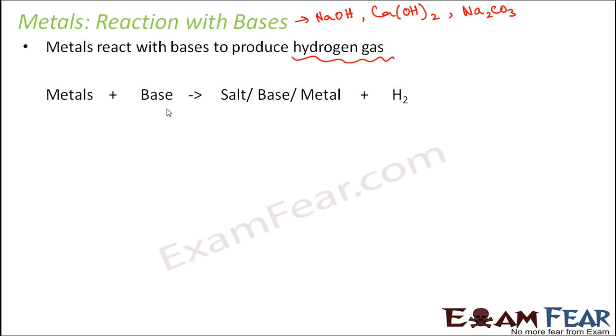So metals react with base to form a salt plus hydrogen gas. Let us take some examples. Let us take the example of zinc. Zinc combines with a base, for example NaOH sodium hydroxide. So what does it form? It forms Na2ZnO2 which is sodium zincate.